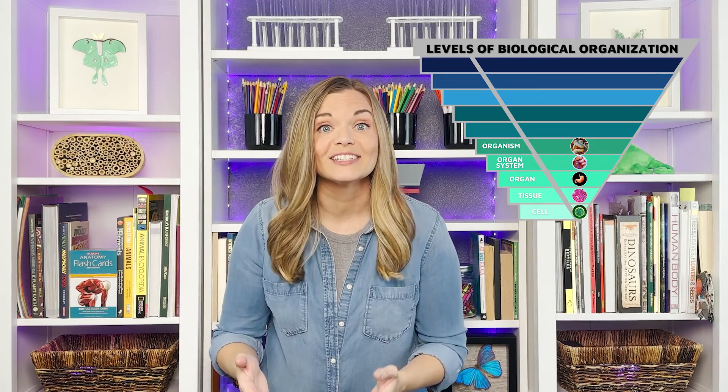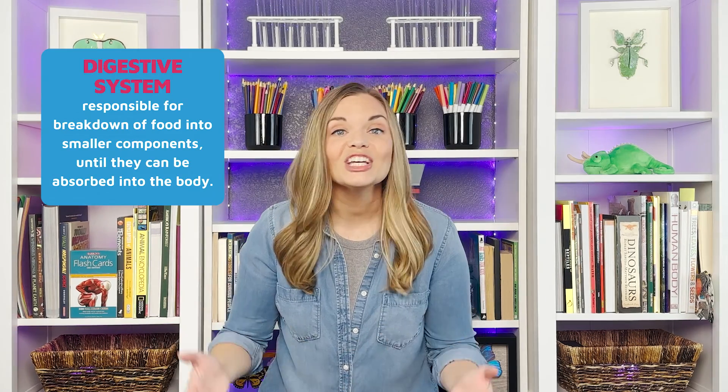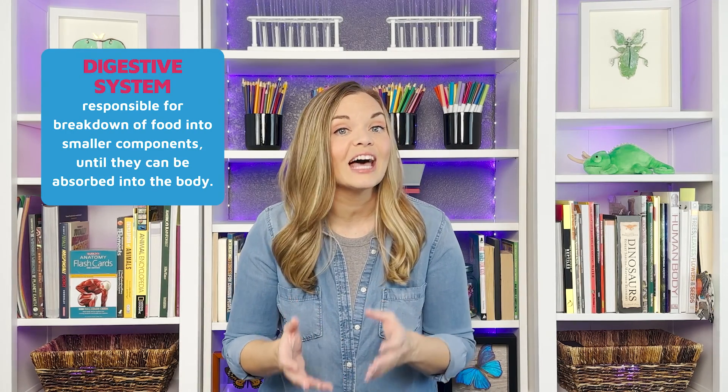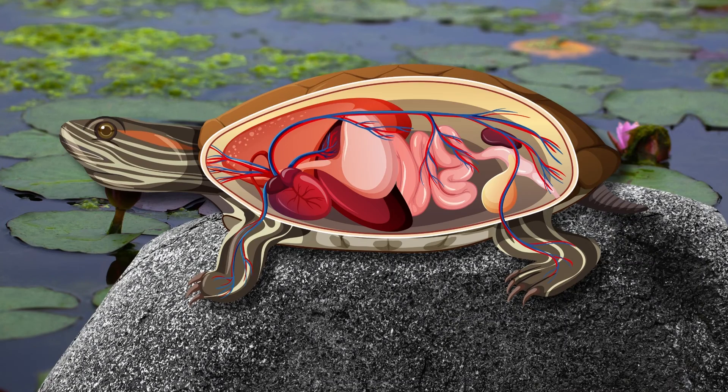As organs work together, they form a connected system — an organ system. Additional functions are possible from that cooperation that a single organ couldn't complete on its own, like digestion. The digestive system is formed by several connected organs that allows the function of digesting food: some organs break down the food, while others specialize in absorbing nutrients and moisture. Turtles have very similar digestive systems to us humans, just in an elongated trachea to fit that long, stretched-out turtleneck.